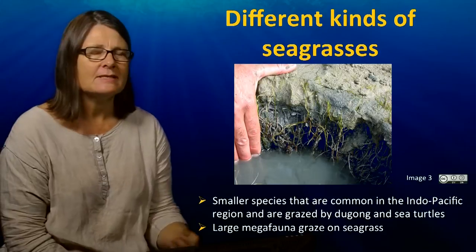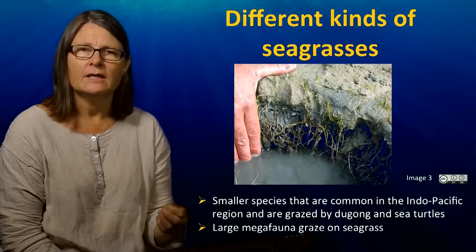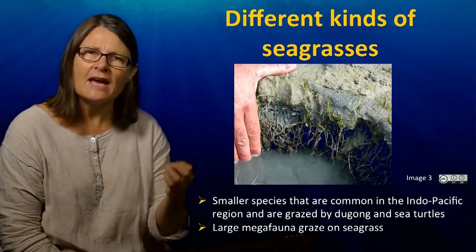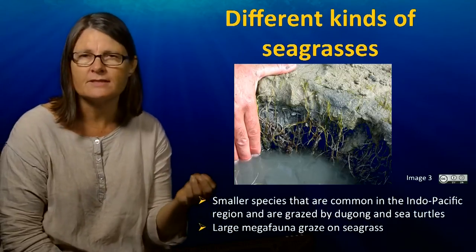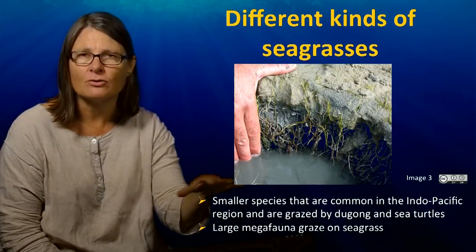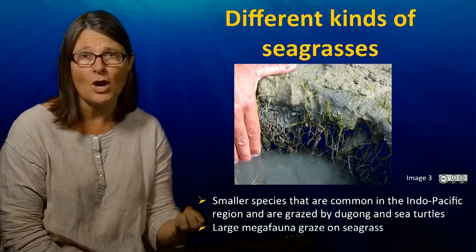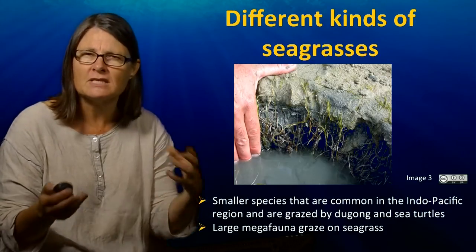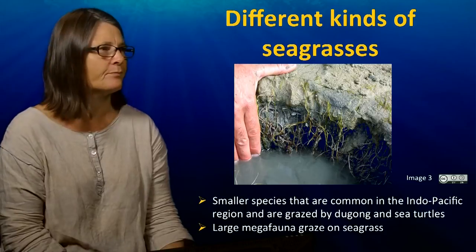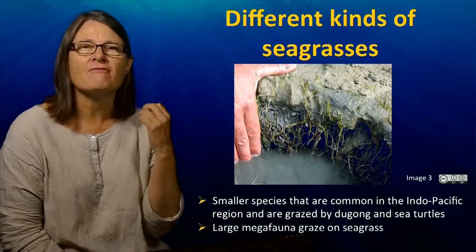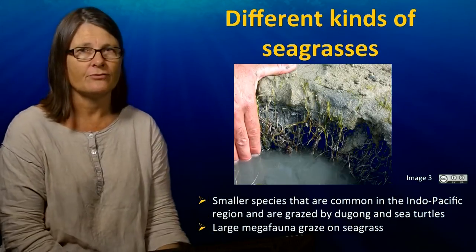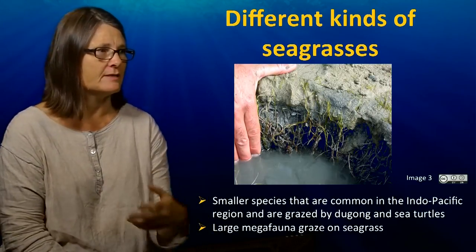These small species tend to be very common in the Indo-Pacific region, where they can cover vast areas. They're actually quite difficult to see sometimes, and they often appear as a green fuzz on the surface, because much of the biomass is actually under the sediment surface. This is some of the favoured food of dugongs, which are the large grazers of these systems.